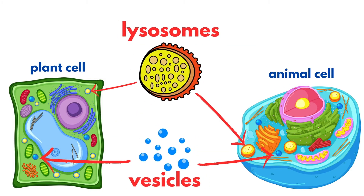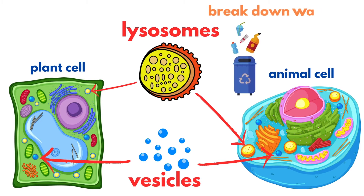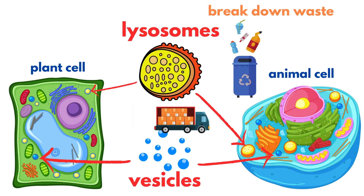Lysosomes and vesicles play crucial roles in cellular cleanup and transport. Lysosomes contain enzymes that break down waste and cellular debris, making them the cell's recycling centers. Vesicles, on the other hand, are like delivery trucks, transporting materials within the cell. Lysosomes are more common in animal cells, while vesicles are found in both plant and animal cells.